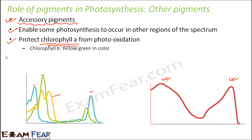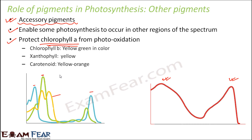The accessory pigments are: chlorophyll B, which is yellow to green in color; xanthophyll, which is yellow in color; and carotenoid, which is yellow-orange in color. Because of the presence of so many pigments, if in a plant chlorophyll A becomes less or scarce, the color of the leaves turns lighter — for example, from dark green to light green. And if there is no chlorophyll A at all, sometimes the color turns yellow, because all the accessory pigments have a yellowish touch in their color.